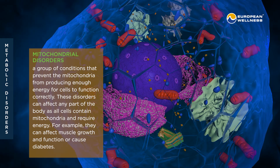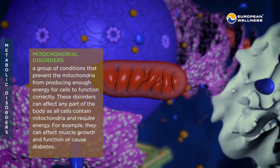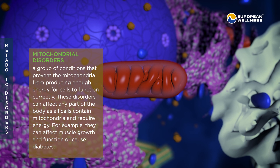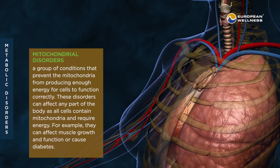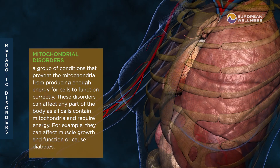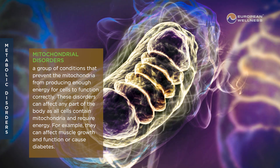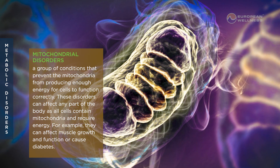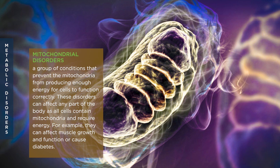Mitochondrial disorders: a group of conditions that prevent the mitochondria from producing enough energy for cells to function correctly. These disorders can affect any part of the body as all cells contain mitochondria and require energy. For example, they can affect muscle growth and function or cause diabetes.